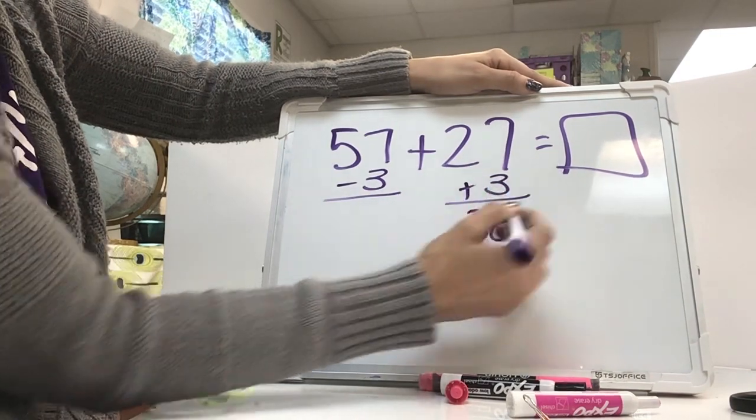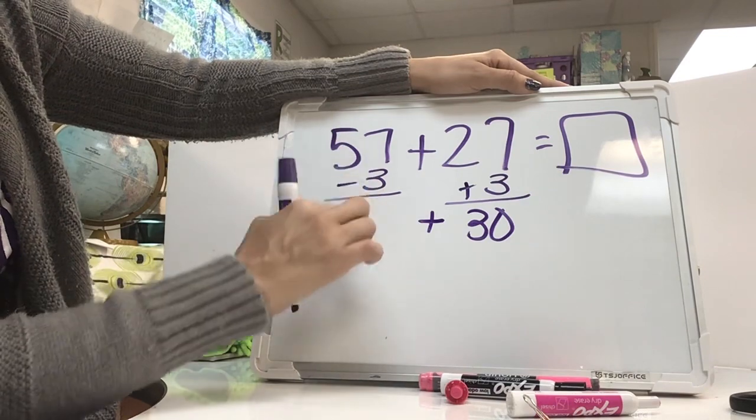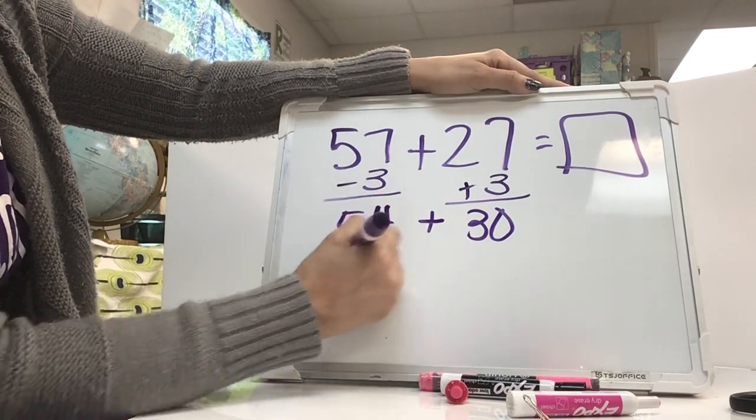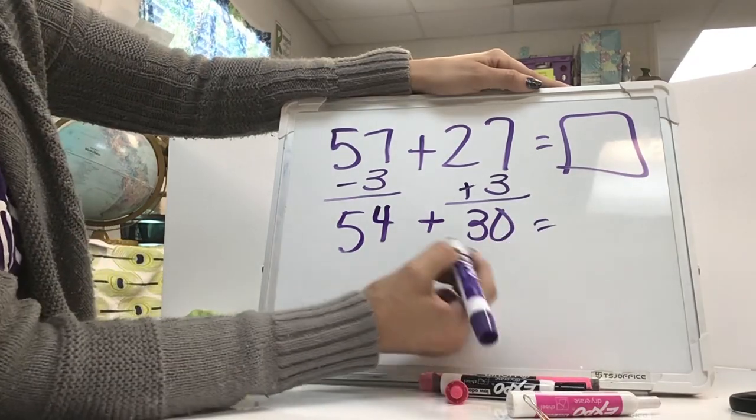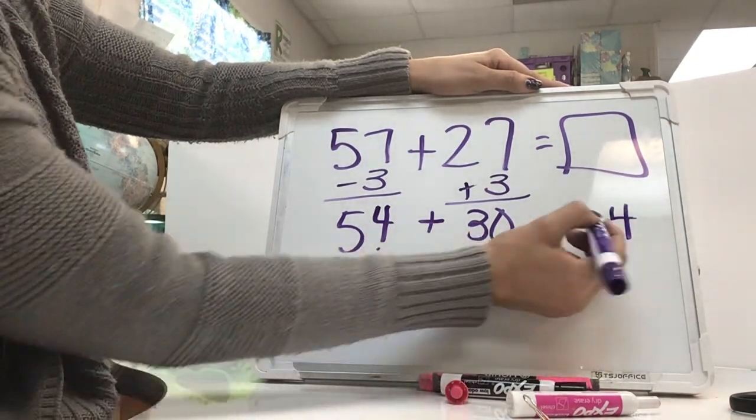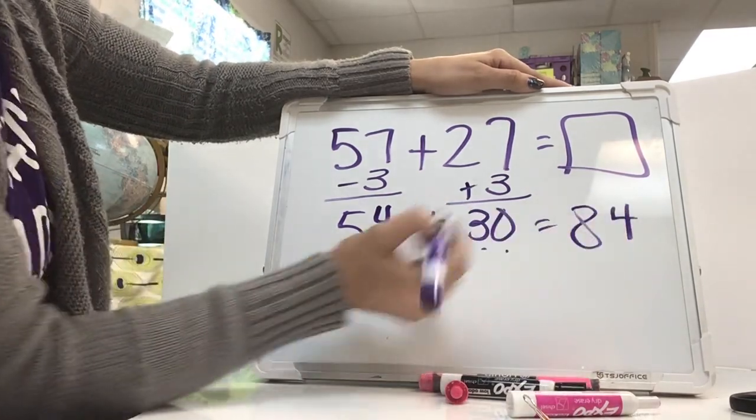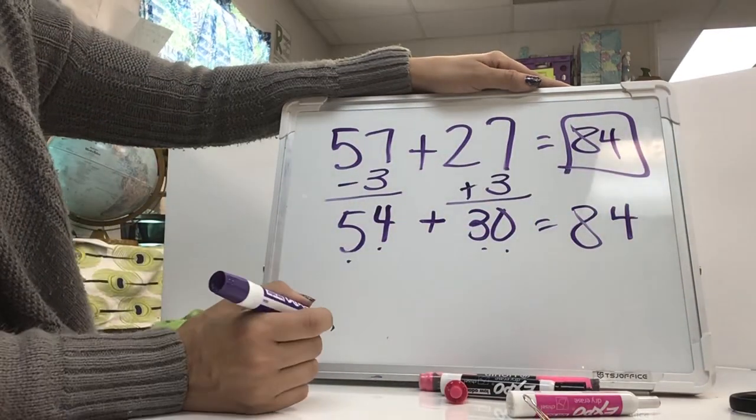27 plus 3. The reason I did that is I wanted to get to the next 10, which is 30. 57 minus 3 is 54. 54 plus 30. Remember, I'm keeping my ones the same. And I'm doing 5 tens plus 3 tens, which is 8 in my 10s place. So 84 is the sum.